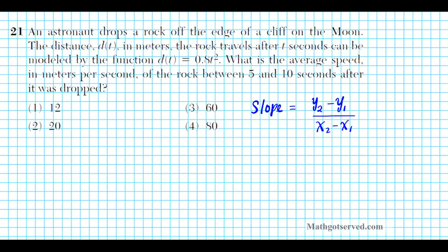You might wonder where x2, x1, y2, and y1 are in this problem. x1 and x2 are given somewhere in the problem, and y2 and y1 you have to find. The x's are your independent variable or your inputs. Since you have the function d of t, your independent variable is t — t is just like your x's.